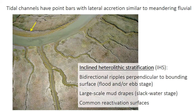The large-scale inclined bounding surfaces should contain bi-directional ripples oriented perpendicular to the surface. Because the water velocity stops twice a day — the slack water shift from flood to ebb, and then from ebb back to flood — mud drapes are very common in this setting. This interbedding of sand and mud is what gives the deposit the name heterolithic, meaning different rock, indicating sand and mud interbedded. The reversing current direction also creates reactivation surfaces, these small-scale erosional truncations in the bar surface.